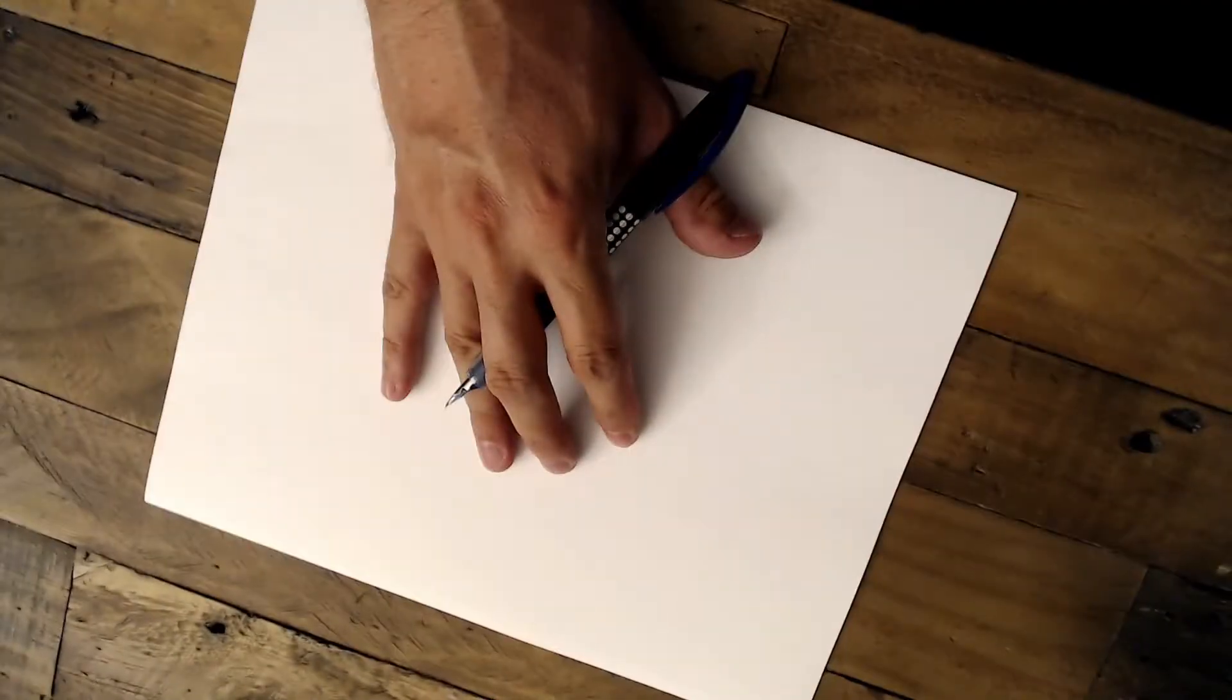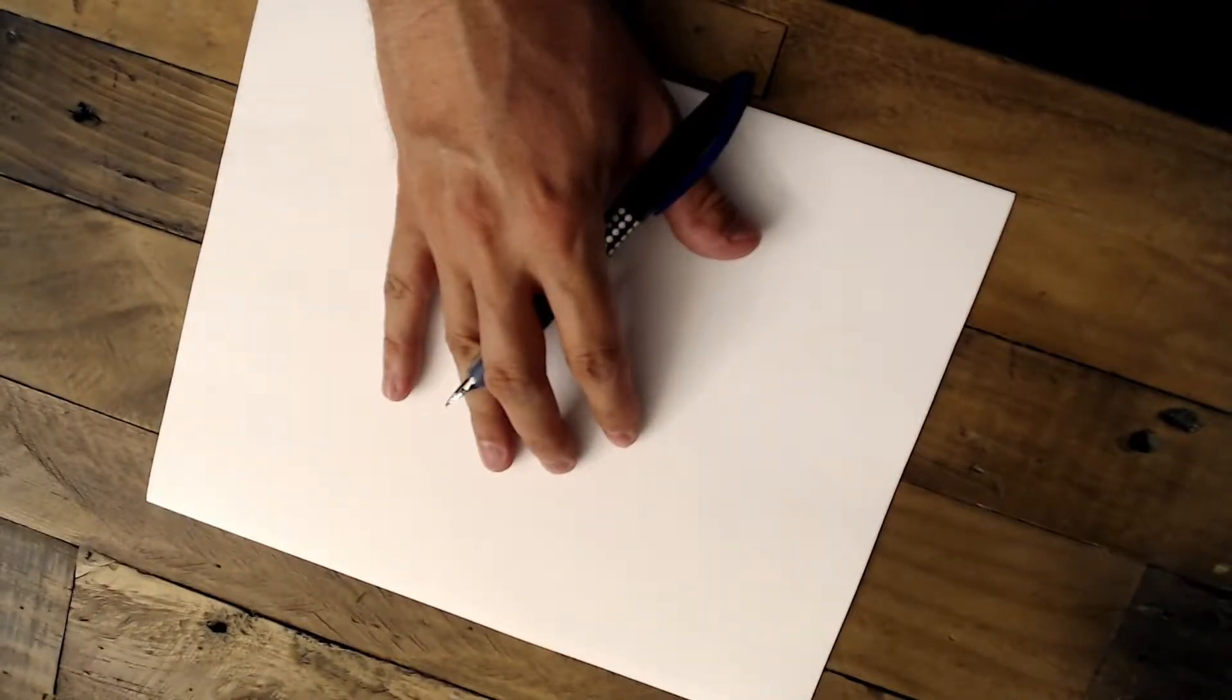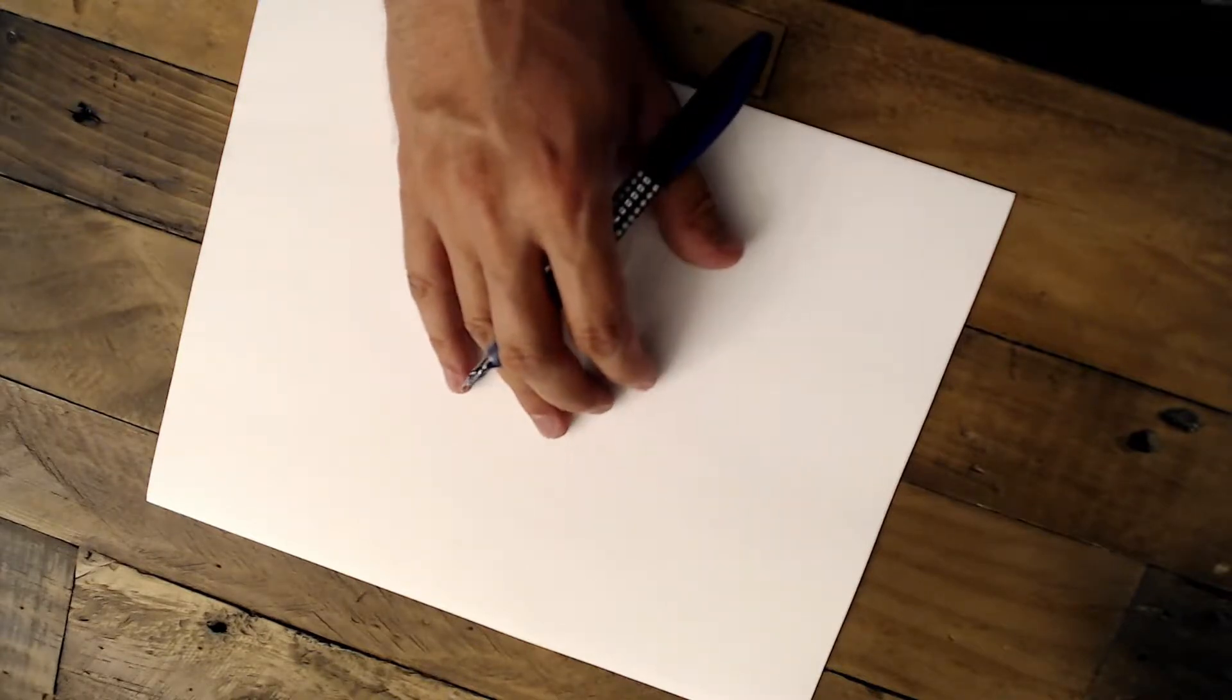With a blank piece of paper, a pencil or pen, you're going to first draw a small triangle.